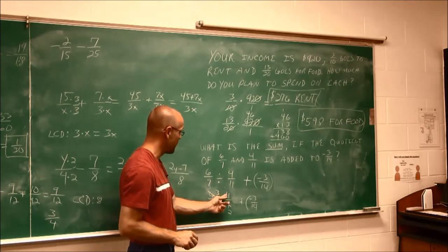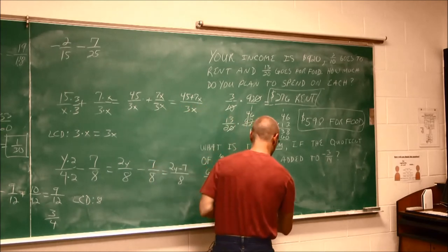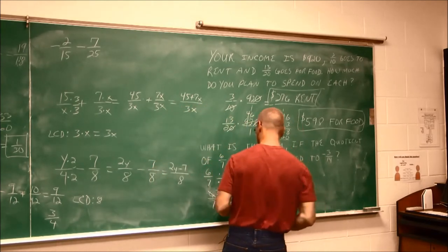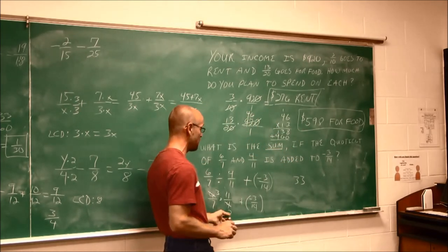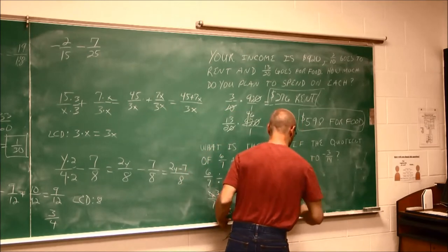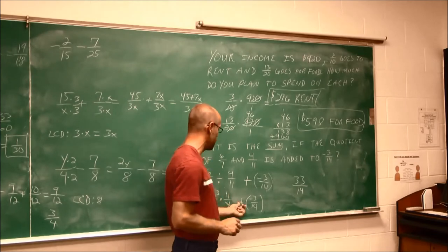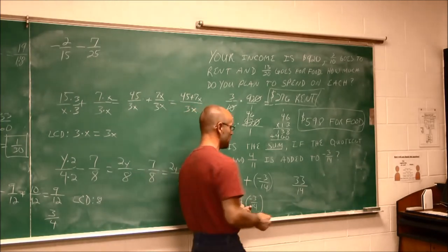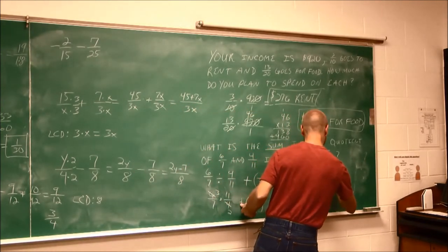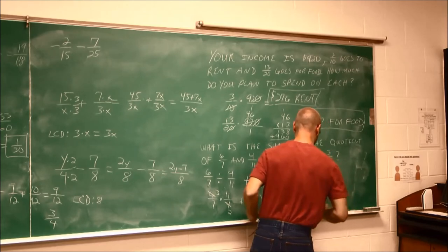And now I can multiply 3 times 11. It's 33. And I'll write it over here. 33 over 7 times 2 is 14. And then we want to add a negative 3 14ths. Well, if we recall, adding a negative is the same as subtraction. So we're going to subtract 3 14ths.